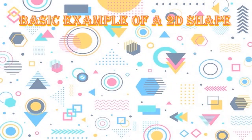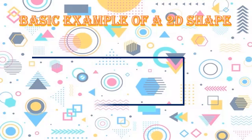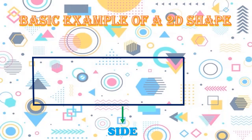Here is a basic example of a 2D shape. This is a rectangle. This is a side, and this is a vertex. A corner is a vertex.